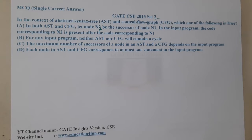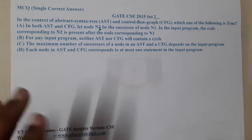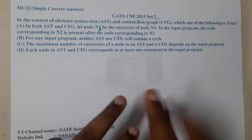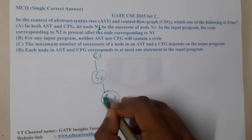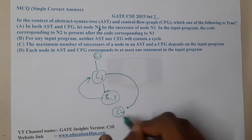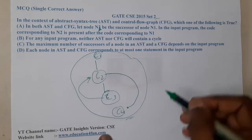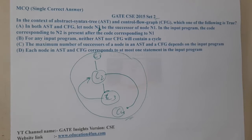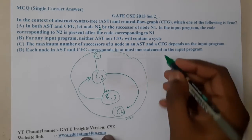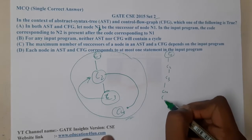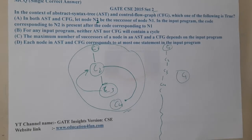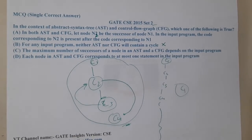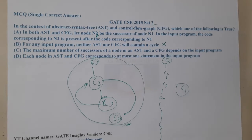Option B says for both AST and CFG, cycles should not exist. But if you recall the CFGs we have drawn — C1, C2, C3 — from C3 you come back, and if some condition fails you go to end of the loop. Most programs are written with loops to minimize code. So there is a high chance that CFGs always have a cycle. Hence option B is completely wrong.